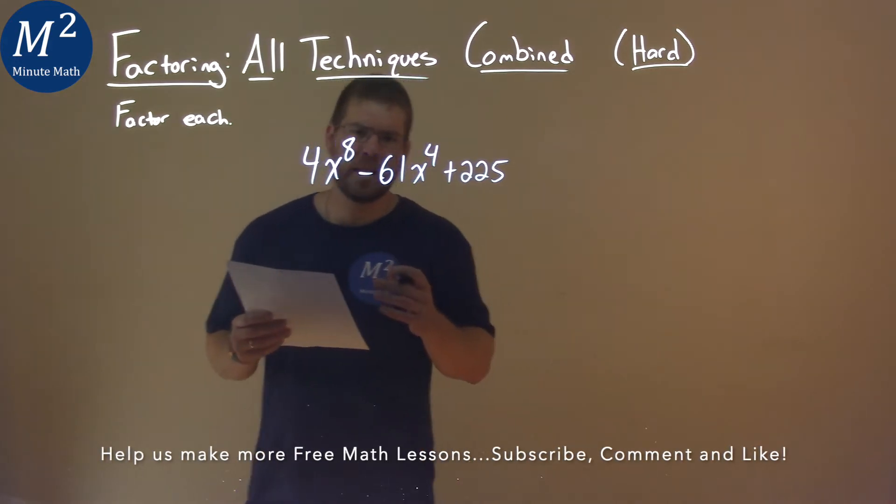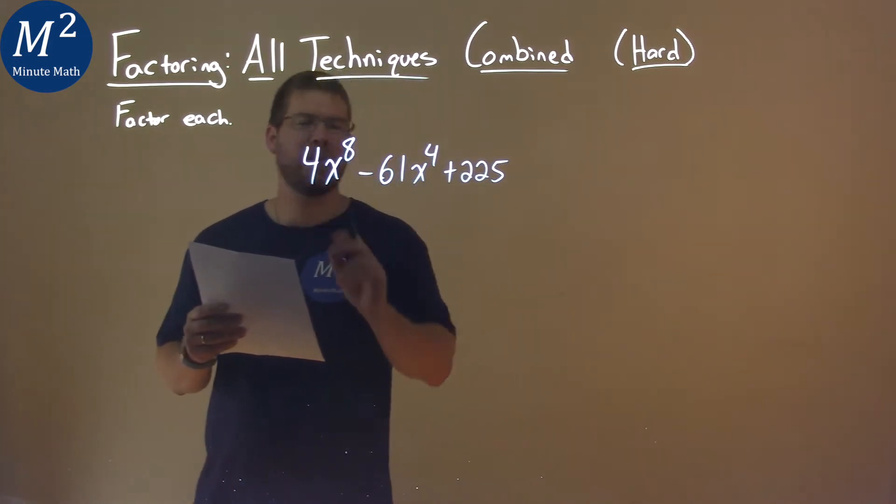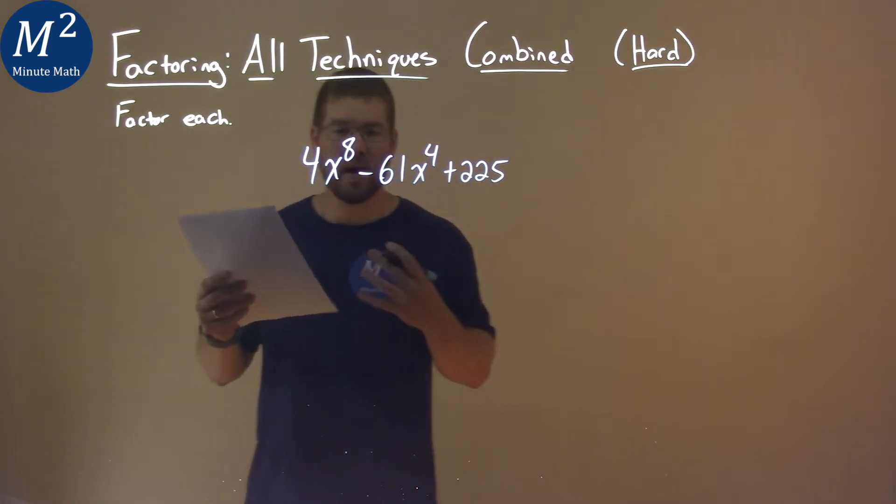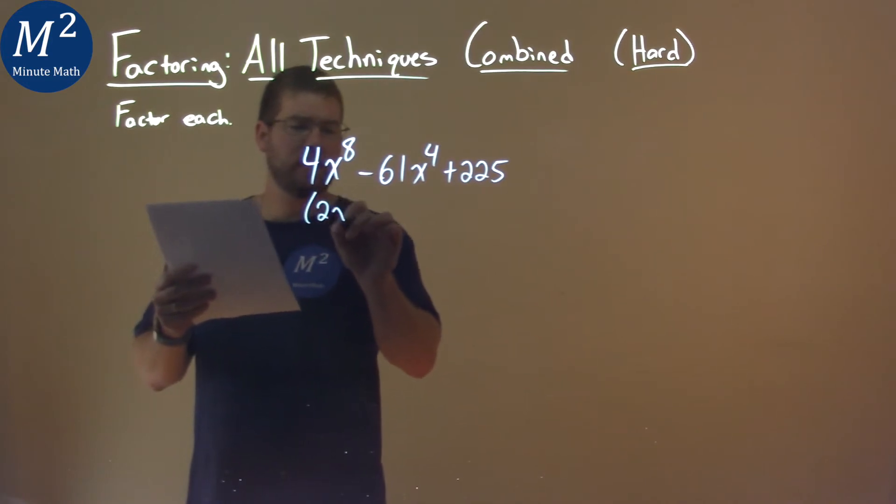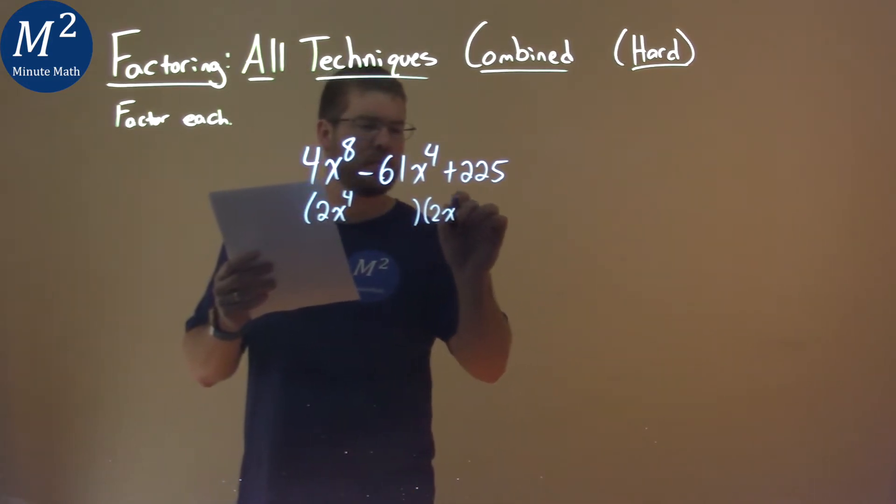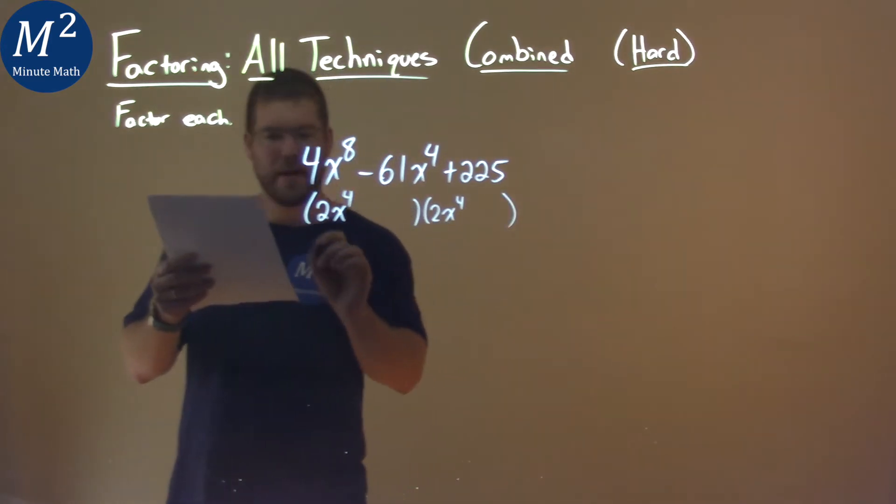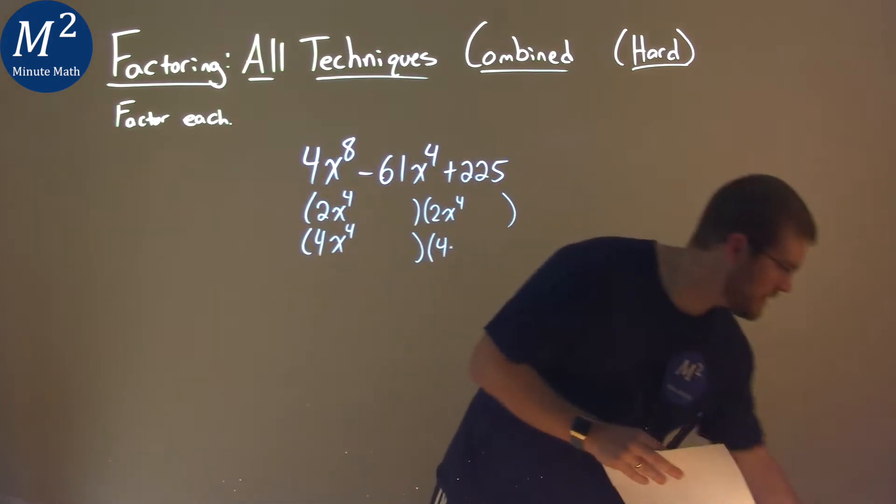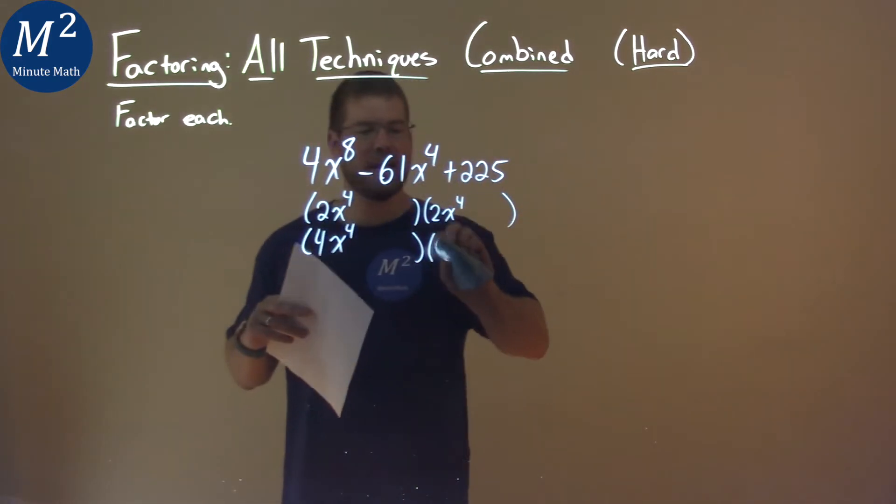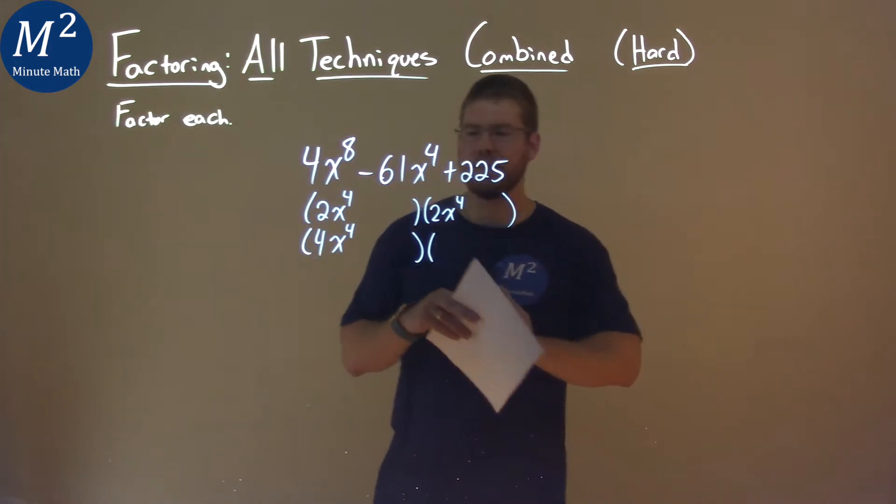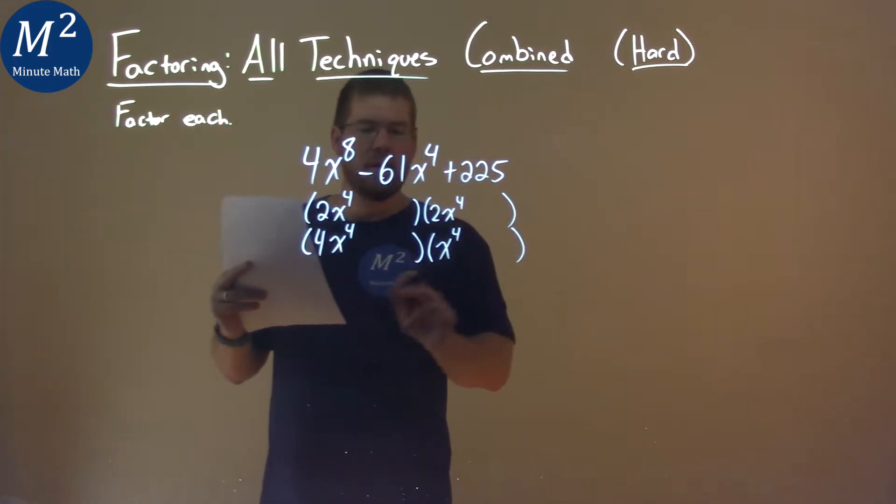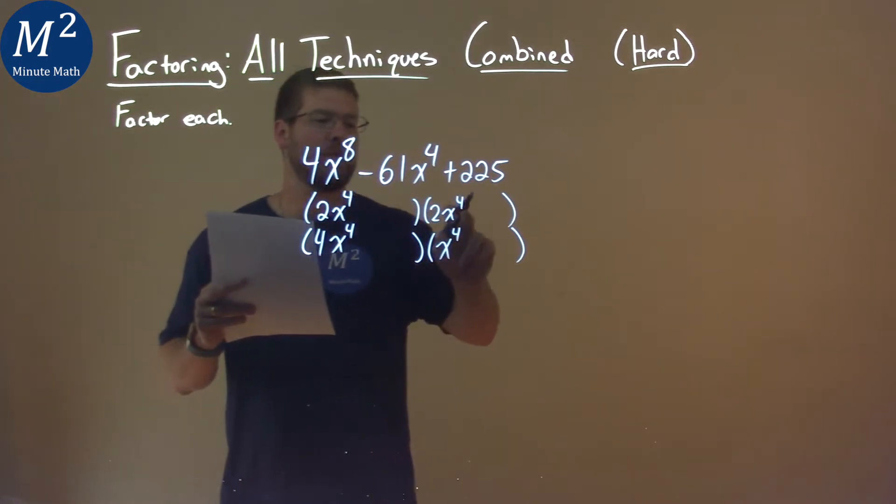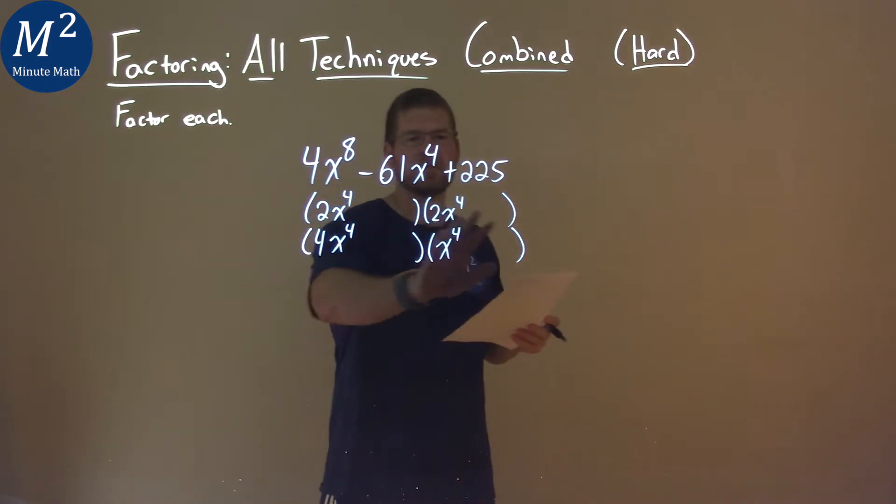Now what's tricky here is we can see it's in quadratic form. We have an a value of 4, meaning there's two options of setting this whole thing up. It has some combination of 2x to the 4th times 2x to the 4th, or we can have 4x to the 4th times x to the 4th. I'm getting ahead of myself. Common mistake, be careful with that. 4x to the 4th times x to the 4th gives me 4x to the 8th. Same thing with 2x to the 4th times 2x to the 4th gives me 4x to the 8th. So we have our two options.